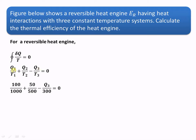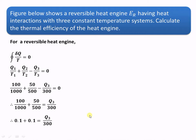Now substituting the values: Q1 is 100 kJ, T1 is 1000 Kelvin, Q2 is 50 kJ, T2 is 500 Kelvin. From these values we can easily find out the value of Q3, which comes out to be 60 kJ.